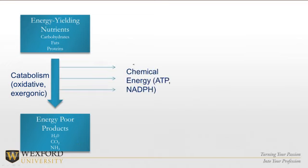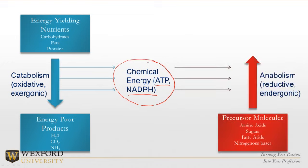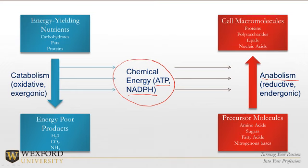Out of that we get chemical energy — ATP and NADPH. The energy that was in the big bonds in our carbs, fats, and proteins is transferred to these molecules. Then we can use that for anabolism — for building. We take the smaller precursor molecules — amino acids, sugars, fatty acids, nitrogenous bases — and make our big macromolecules: proteins, polysaccharides, lipids, and nucleic acids.